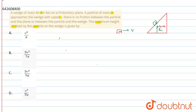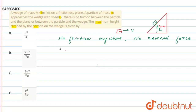No friction means there is no external force. No external force is acting on the system. So if there is no external force, then linear momentum will be conserved. We know that if there is no external force acting on the body or system, then linear momentum is conserved.